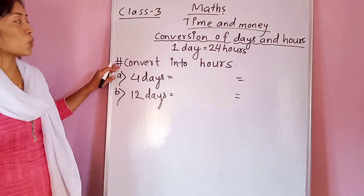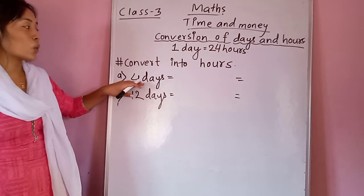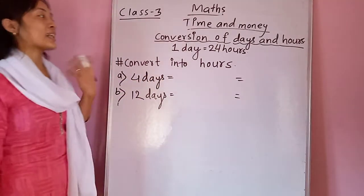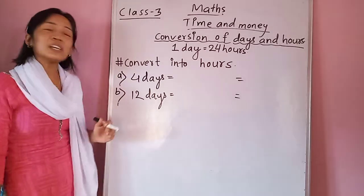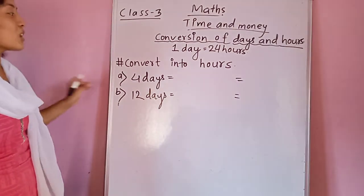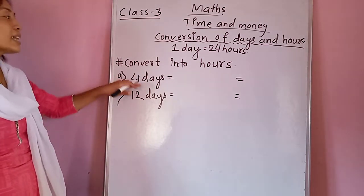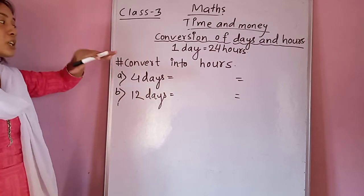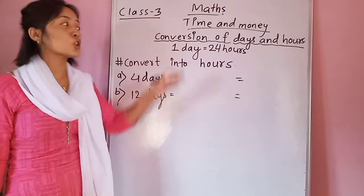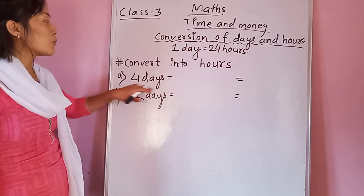Now look at the question. Here it is written 'convert into hours' — the question is given in days and you have to convert it into hours. There is a certain rule for converting days into hours. What you have to do is multiply the given days by the relation, and the relation between days and hours is 24.